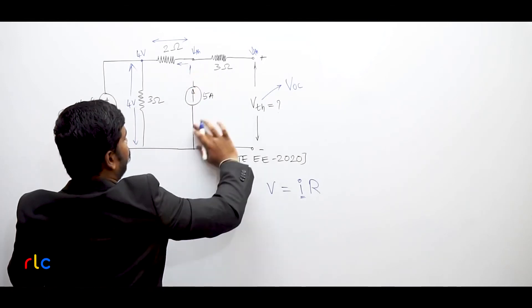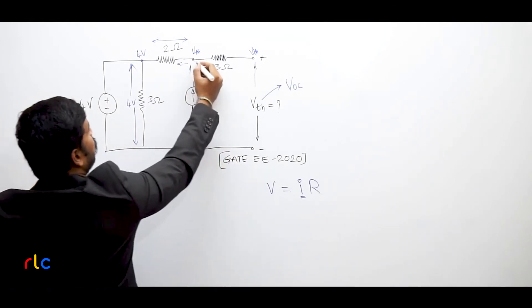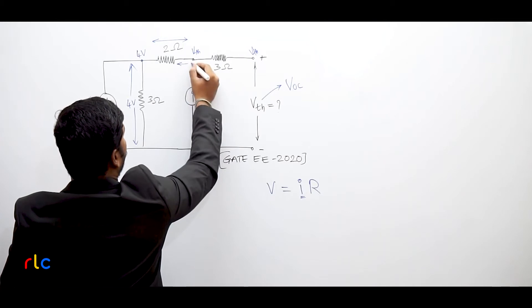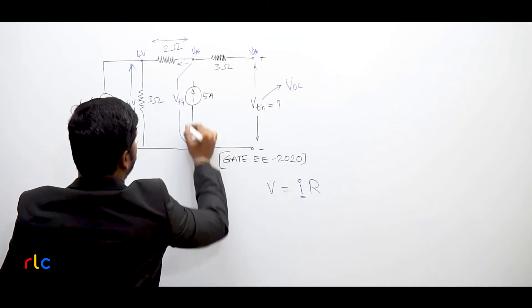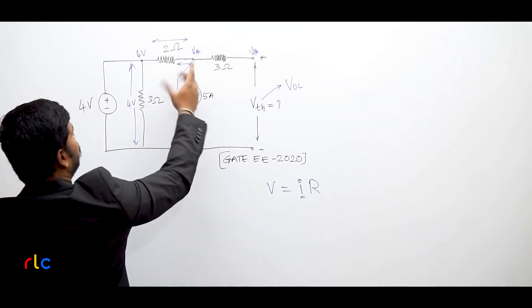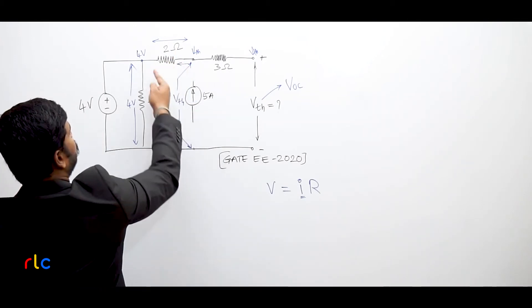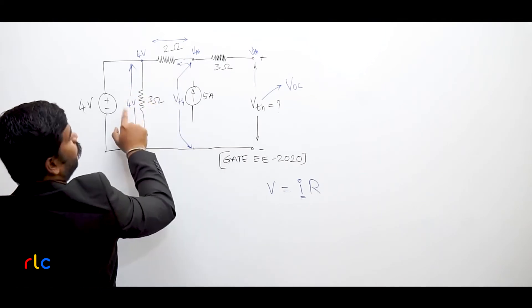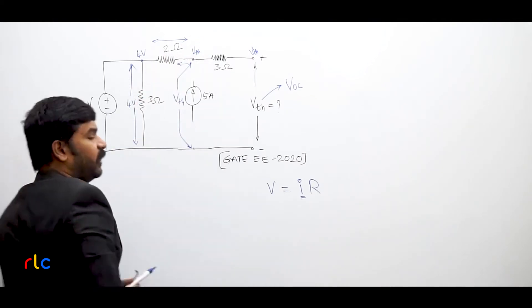Because now just forget about this current source. Now what is the voltage at this point? At this point the voltage is VTH only. At this area, at this region, the voltage is VTH. Now VTH is nothing but the voltage in 2 Ohms and voltage across the 3 Ohms, that is 4 volts only. The sum is only the VTH.